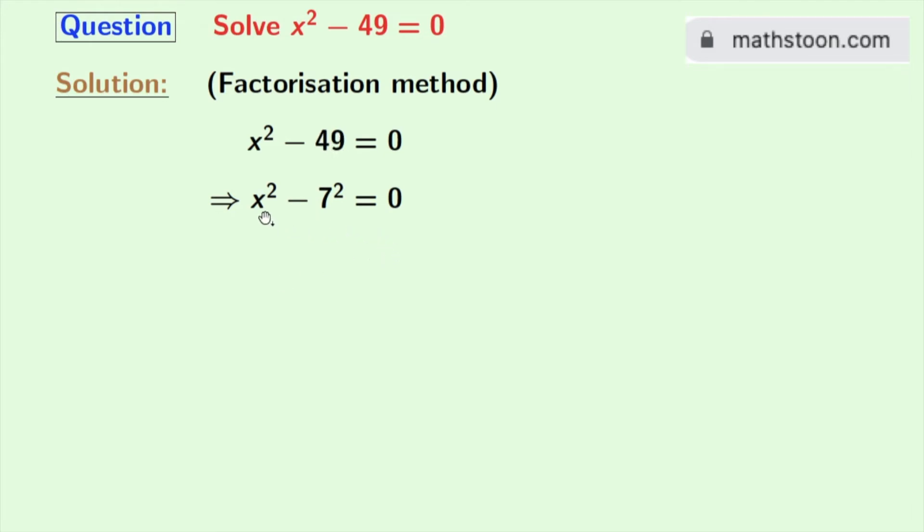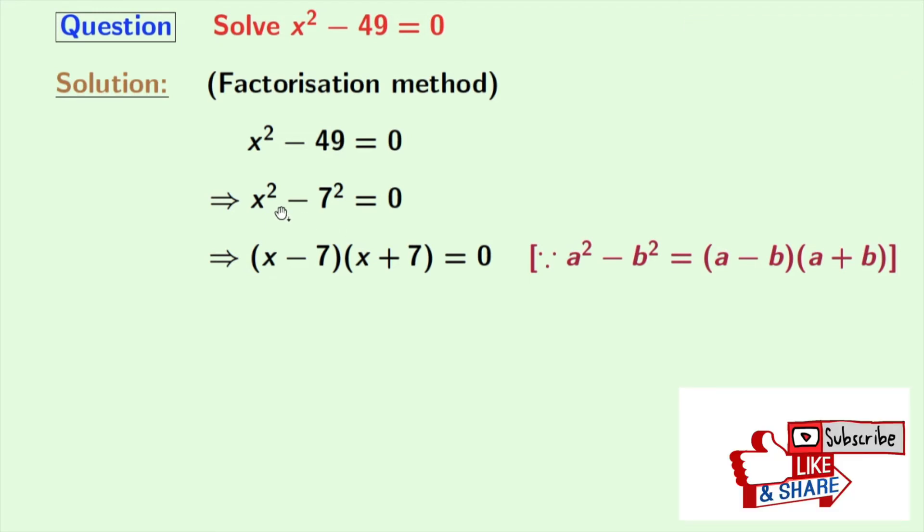Look that the left hand side is in the form of a squared minus b squared where a is x and b is 7. So we can easily apply the formula of a squared minus b squared in this equation. So applying that we will get x squared minus 7 squared is equal to x minus 7 times x plus 7 and this is equal to 0.